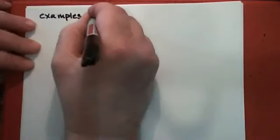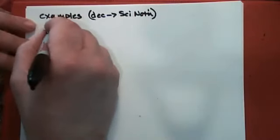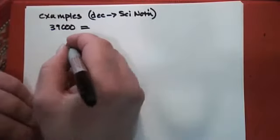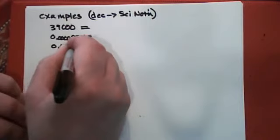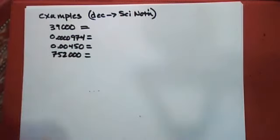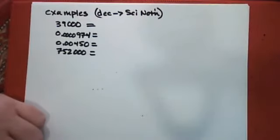These examples are examples of going from a decimal form to scientific notation. The first one is 39,000 in scientific notation. The second one is 0.0000974. The third one is 0.00450. And the last one is 752,000. In converting to scientific notation, you're also trying to reflect the number of significant figures in the original number, so the scientific notation should have the same number of significant figures as the original. First we might want to figure out how many significant figures these numbers have.